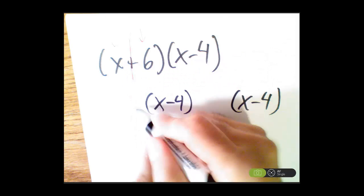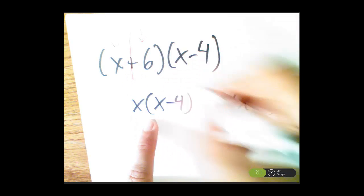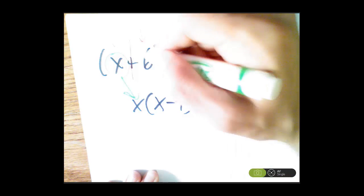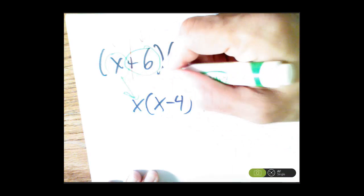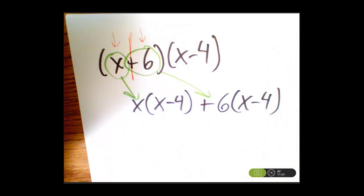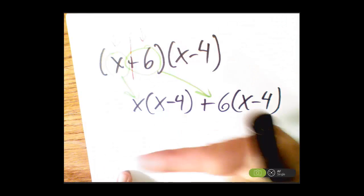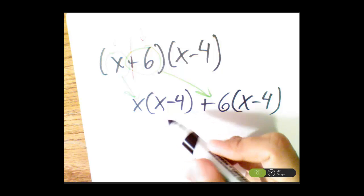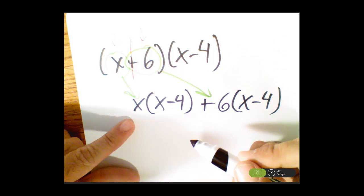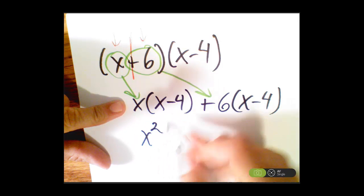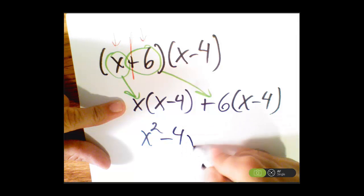Check this out — I'm going to multiply x over here, and here I have a positive 6. Where am I getting all these things from? Well, I drop this x down, and then I have this positive 6 right here. I have a lot of light coming from that direction, but let's finish this out. I'm going to distribute — distributive property. I multiply x times x, which gives me x squared, and x times negative 4, which gives me negative 4x. Beautiful.